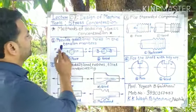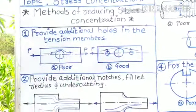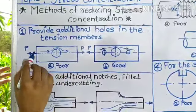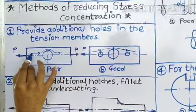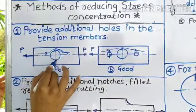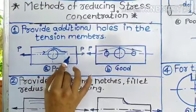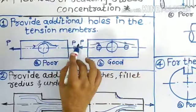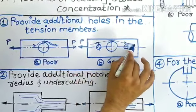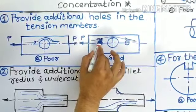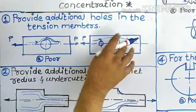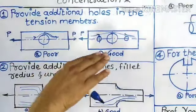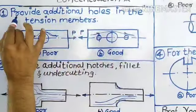The first method to reduce stress concentration is to provide additional holes in the tension member. Suppose a shaft in tension contains a hole — this becomes a discontinuous portion and stresses get concentrated near this circular section. To reduce the stress concentration, we drill additional holes near the existing hole. Due to these additional holes, the curvature of the stress concentration line decreases, stresses get distributed over both holes, and the stress concentration near the original circular section is reduced.